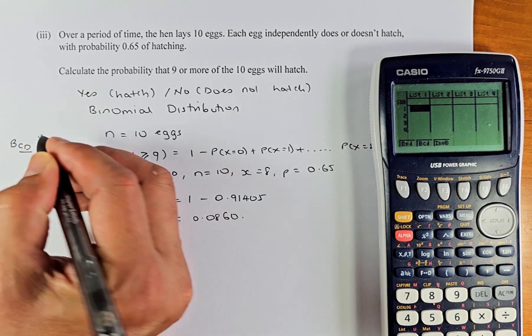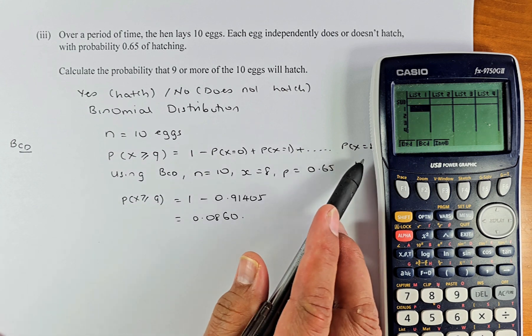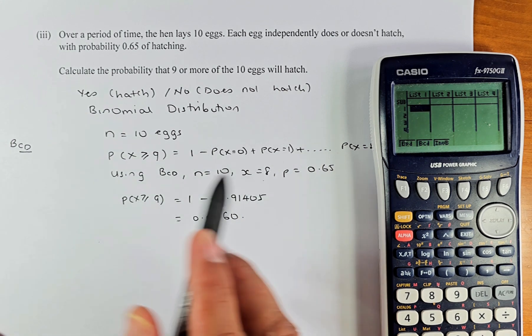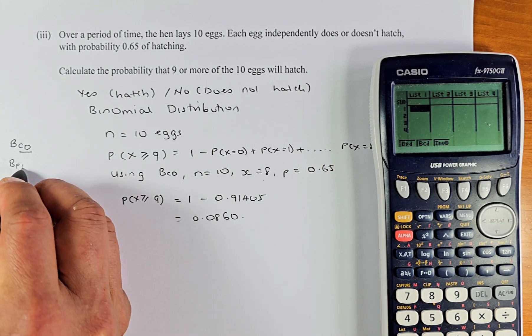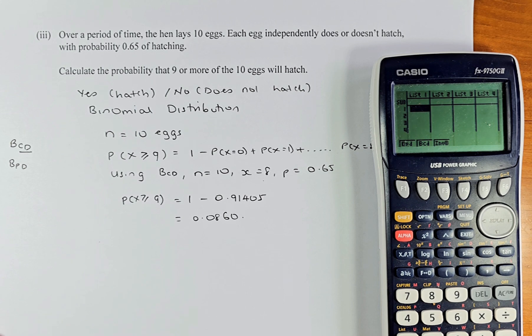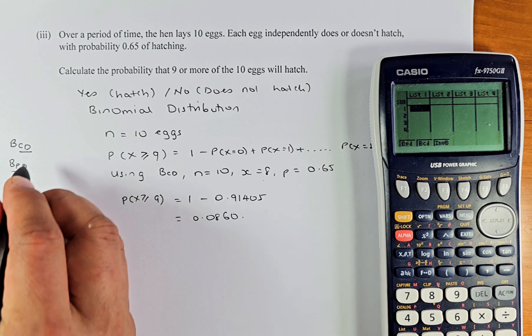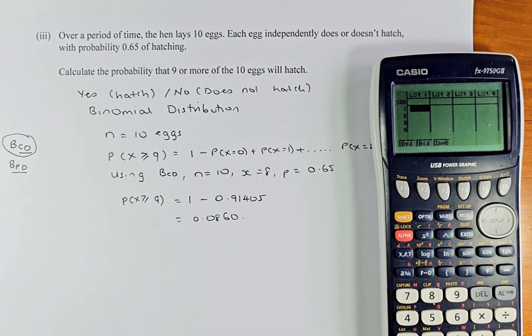You have to understand BCD and BPD. I am going to explain. BCD means accumulative from 0 to whatever number. In this case, it is going to be 0 to 8, so your x equal to 8. BPD, on the other hand, I would recommend is point. If I say exactly 2 eggs or exactly 10 eggs, then you will use BPD. In this case, we are going to do BCD.